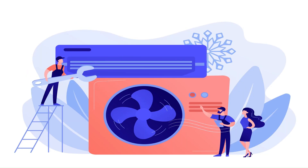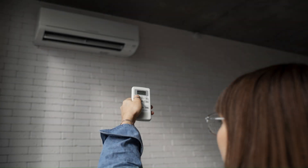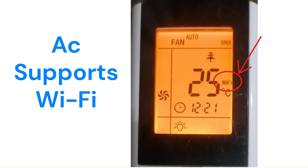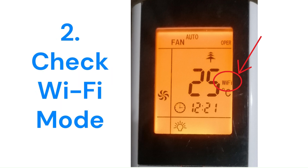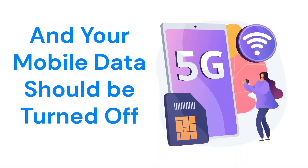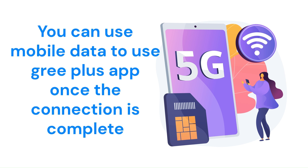If Wi-Fi connection fails, here is a troubleshooting guide. First, make sure your electrical power is turned on for the outdoor and indoor units and that your AC supports Wi-Fi function. Then check that Wi-Fi mode is turned on. Ensure that you are connected to a 2.4 GHz Wi-Fi router instead of a 5 GHz router, and that your mobile data is turned off. You can use mobile data to use the GRI-Plus app once the connection is complete.